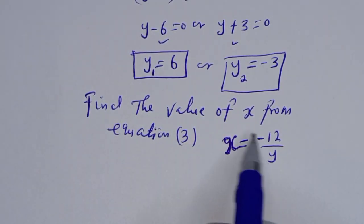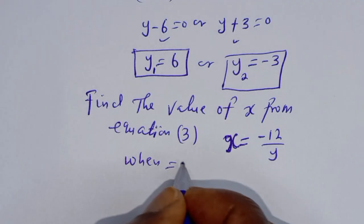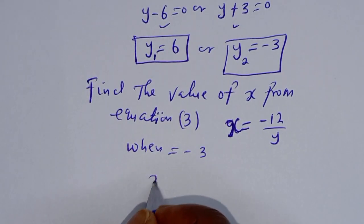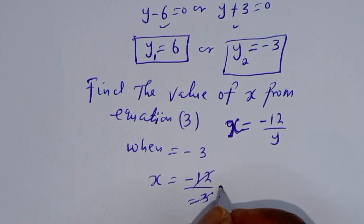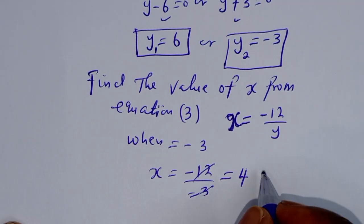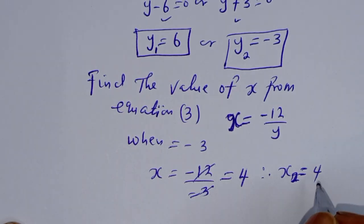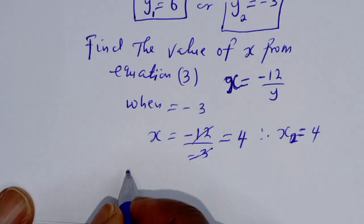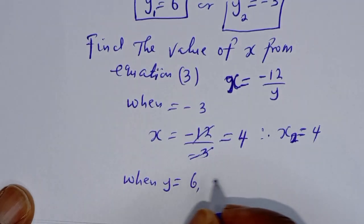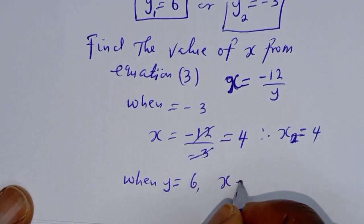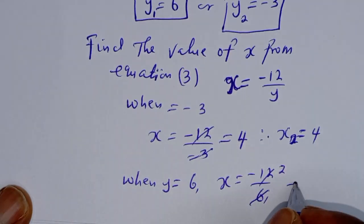Now let's find the value of x from equation 3, since we have the values of y. When y = -3, x = -12 / -3 = 4, so x₂ = 4. When y = 6, x = -12 / 6 = -2.